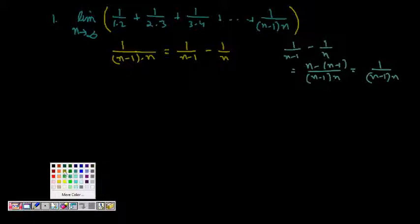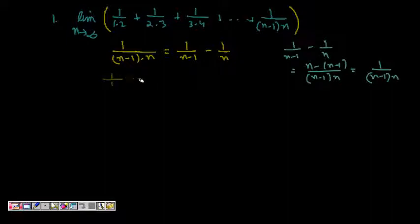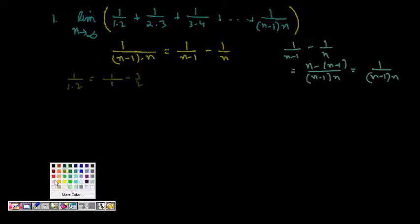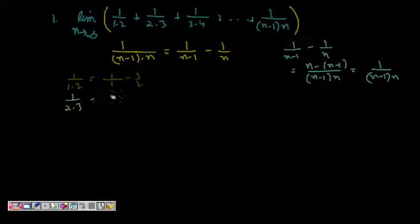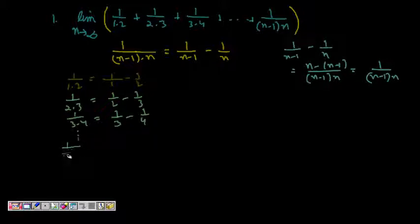Now we want the summation. Writing each term: 1/(1·2) = 1/1 - 1/2; 1/(2·3) = 1/2 - 1/3; 1/(3·4) = 1/3 - 1/4; and similarly, 1/((n-1)·n) = 1/(n-1) - 1/n.